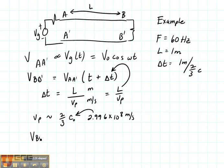So my V_B and B' is going to be equal to V0 times the cosine of omega. And then it's going to be T, but now it's T plus delta T. So it's T plus the length divided by the velocity of propagation. So how much time delay do I have?